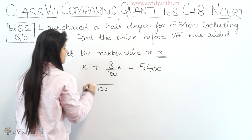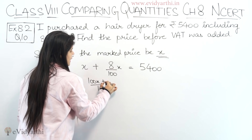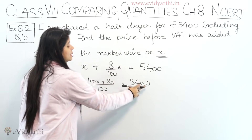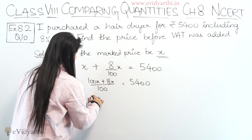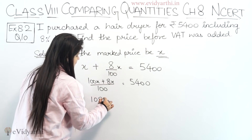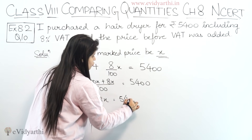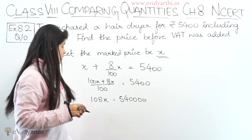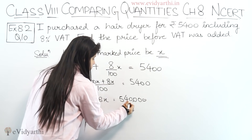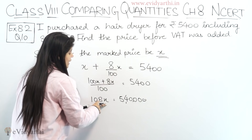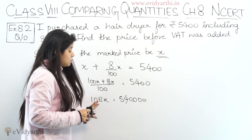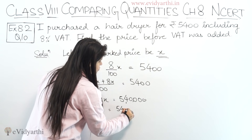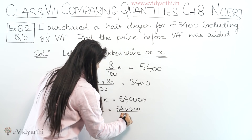This will be 100X plus 8X equals 5400. Multiplying through by 100, that becomes 108X equals 540,000. Now we find X: X equals 540,000 divided by 108.